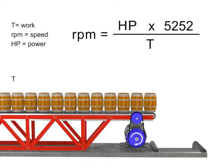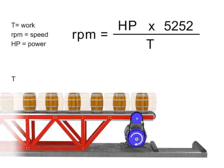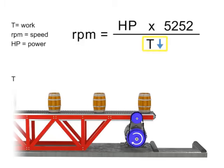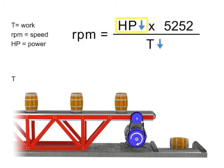Similarly, the opposite is true. If we wish speed to remain constant and decrease torque, then horsepower also decreases.